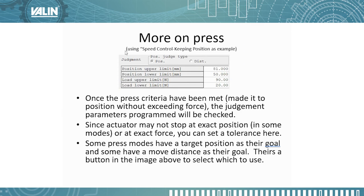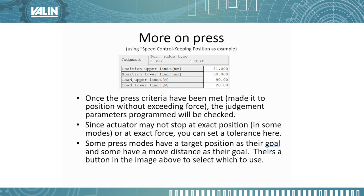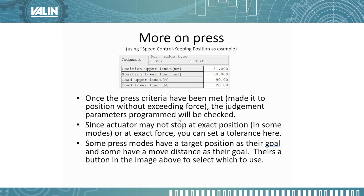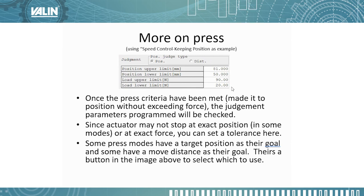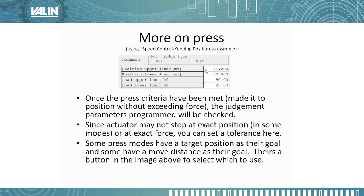In this example, we used speed control keeping position. Once the press criteria have been met — in this case, we made it to the position without exceeding the set force — the judgment parameters that we program can be checked. These are in the software right above where you set up your move sections or program sections. Once we get to that position, we can look at it bracketed: if our target position was 75, we can set the lower limit to 72 and the upper limit to 78.